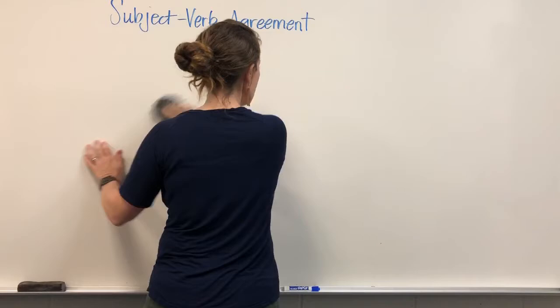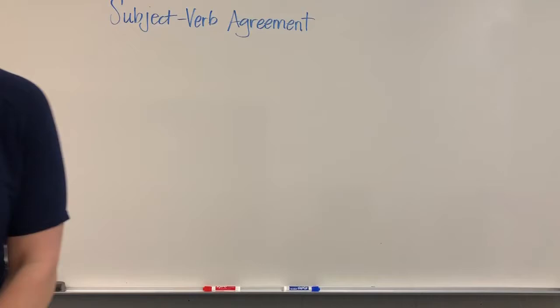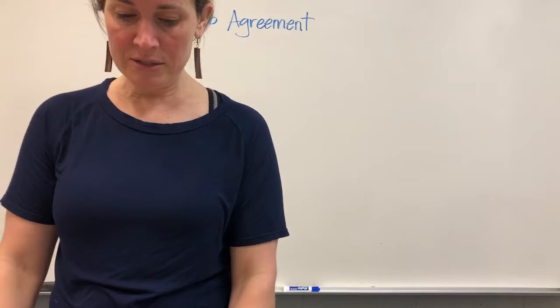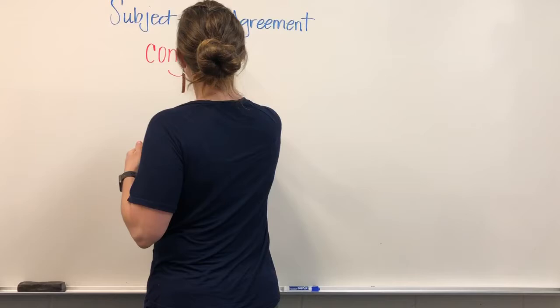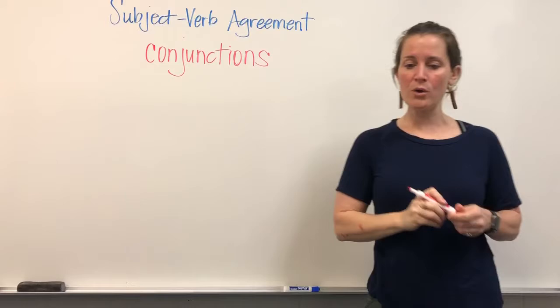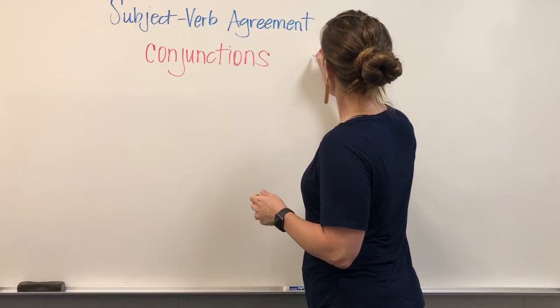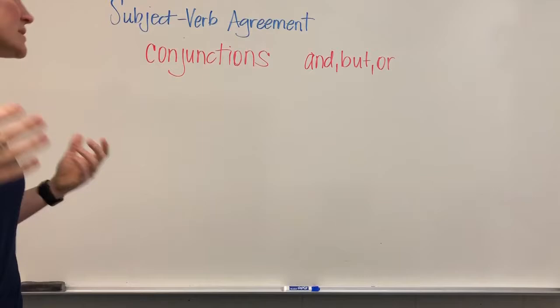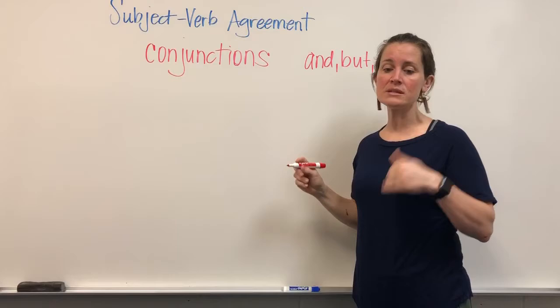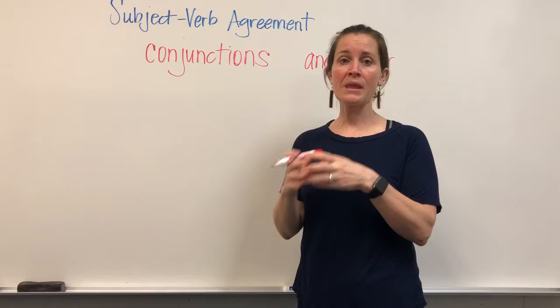Now let's move on to one more thing before we close for today. We have what's called a compound subject. You should remember our conjunctions — the ones we look at most for making things compound or combining things are 'and,' 'but,' and 'or.' These conjunctions help us with compound subjects and verbs. A compound subject is when two or more subjects share the same verb.